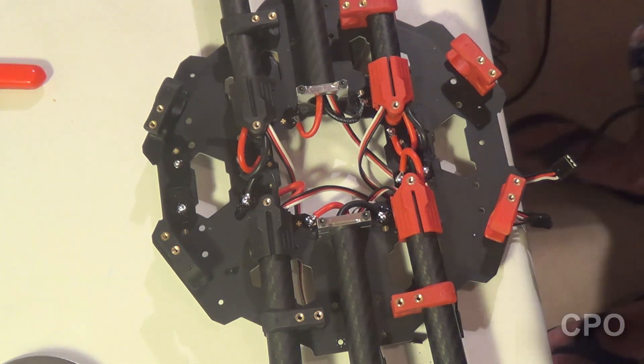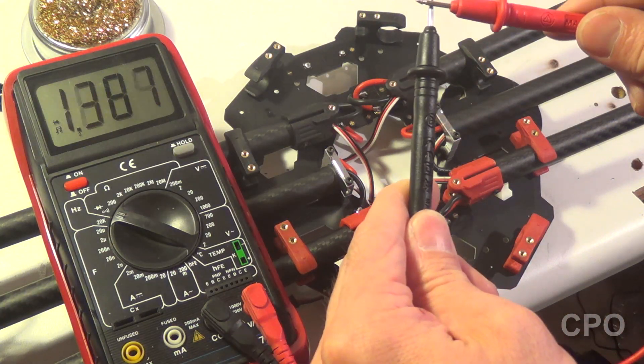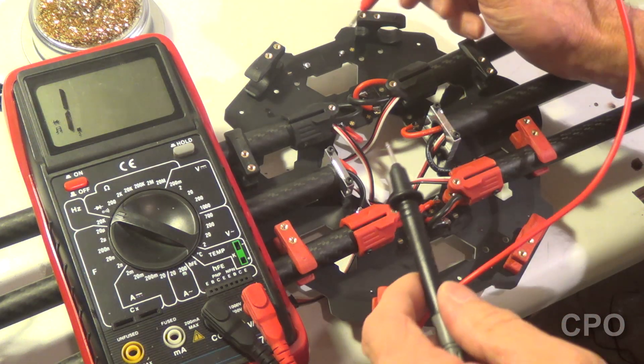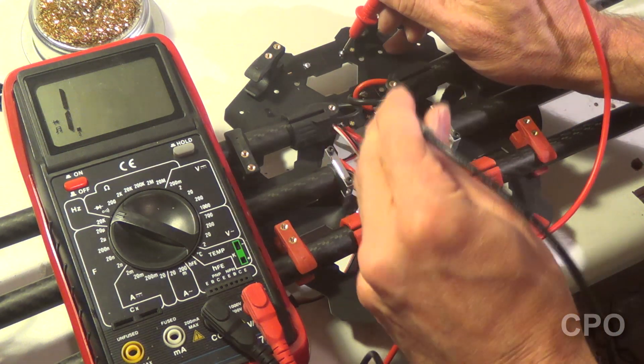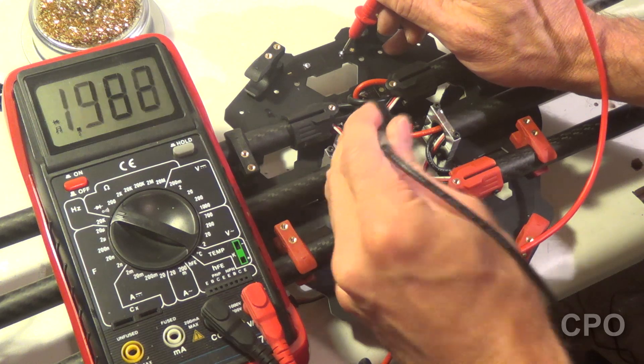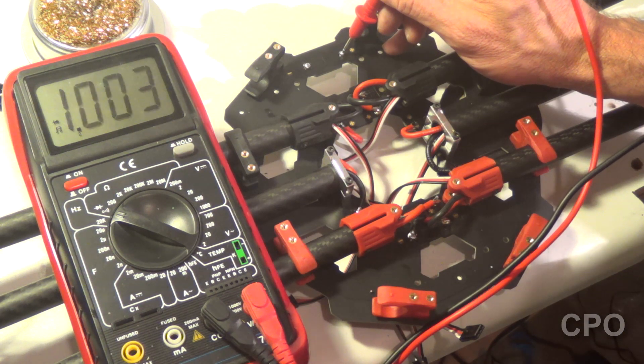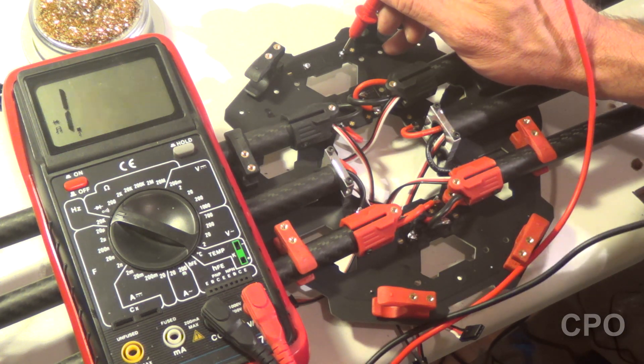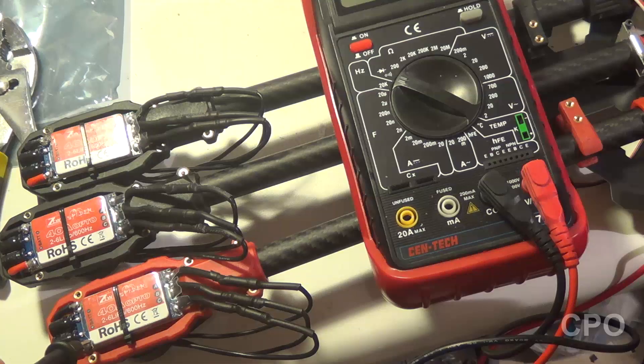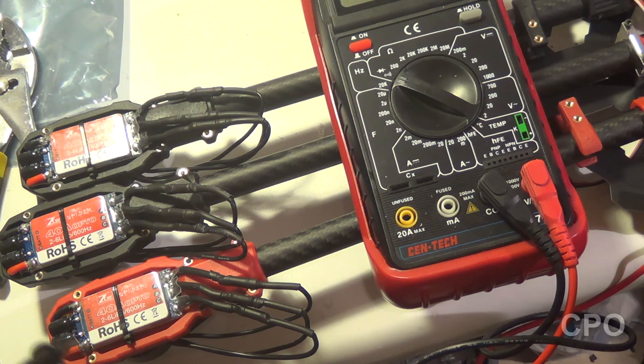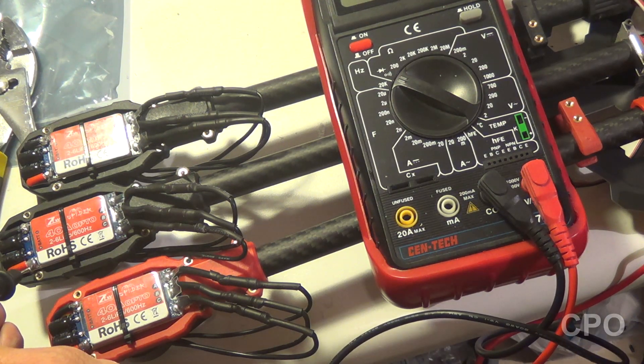All right. And there's what it looks like. Now, what I'm doing is testing continuity between the positive connections and the negative connections. So going through all the positives. And I'm actually testing against the ESC because I want to make sure that my connections are right and that I've got continuity.